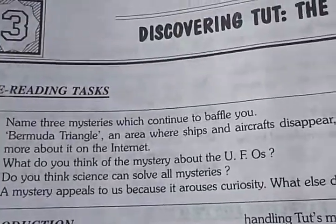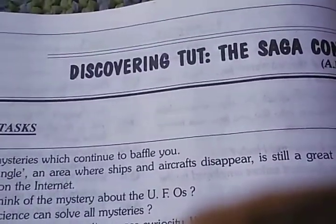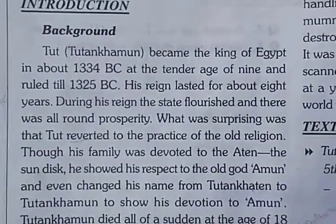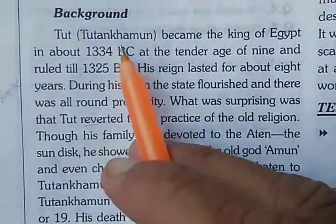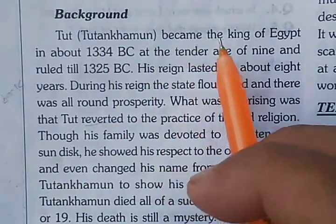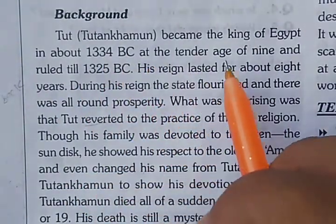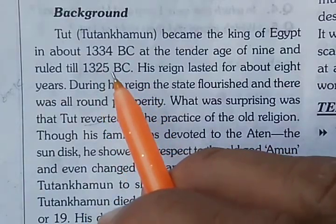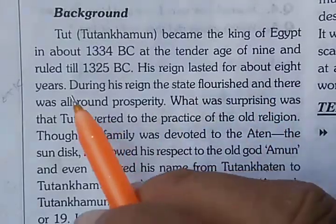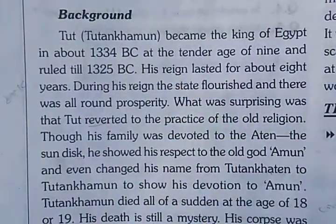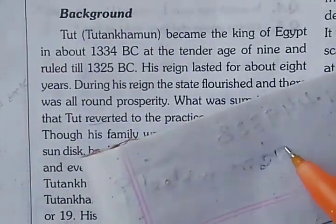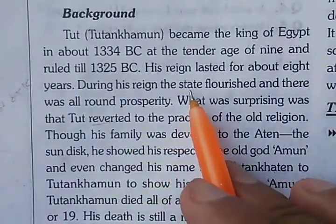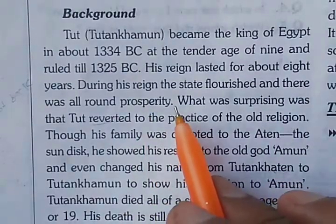Now we are going to start reading — 'Discovering the Saga Continue,' written by A.R. Williams. Introduction: the name of today's king is Tutankhamun, who also became the king of Egypt around 1334 BC at the tender age of nine. At the age of nine, he became the king and ruled till 1325 BC. His reign lasted for about eight years.